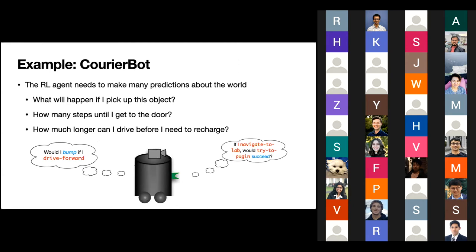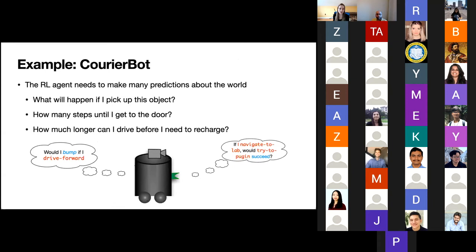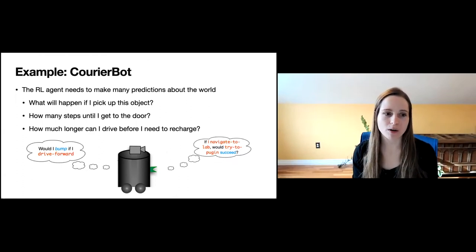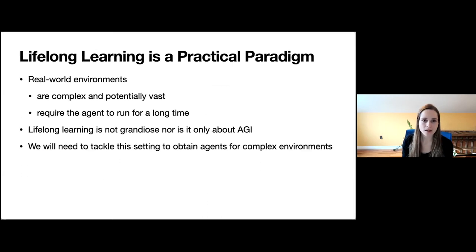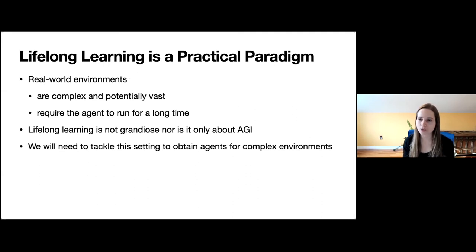Think about what a courier agent might look like in this lifelong learning setting — a little robot navigating a city dropping off packages. We'd naturally think this agent should be making many predictions about its world: what will happen if I pick up this object? How many steps until I get to that door? How much longer can I drive before I need to recharge? Lifelong learning is a very practical paradigm to me. Real-world environments are complex and potentially vast, and they require agents to run for a long time.